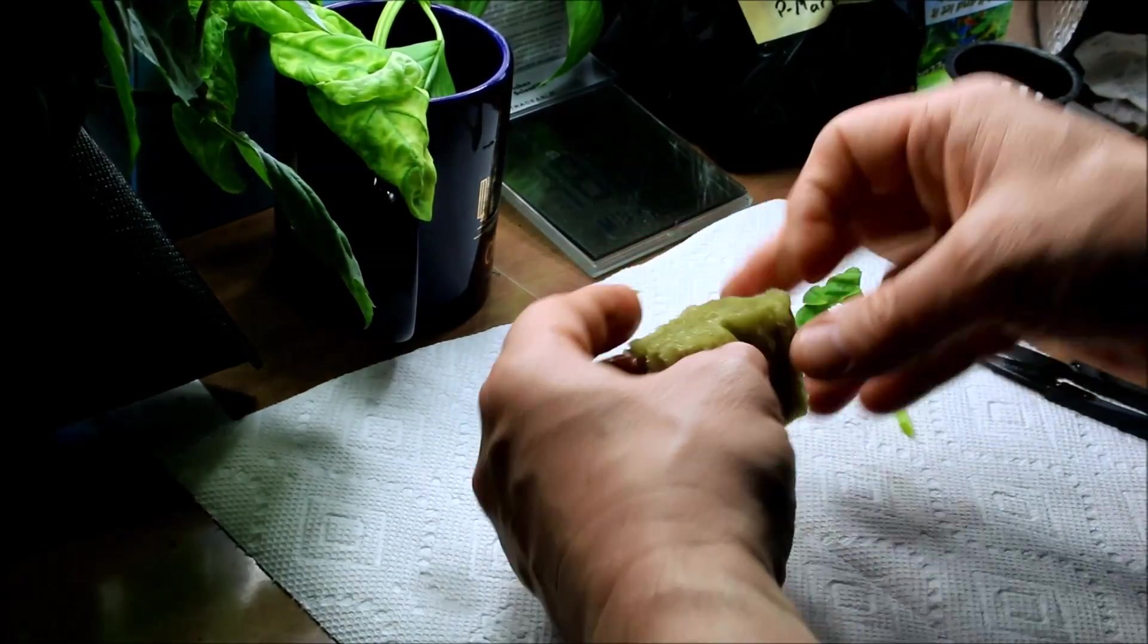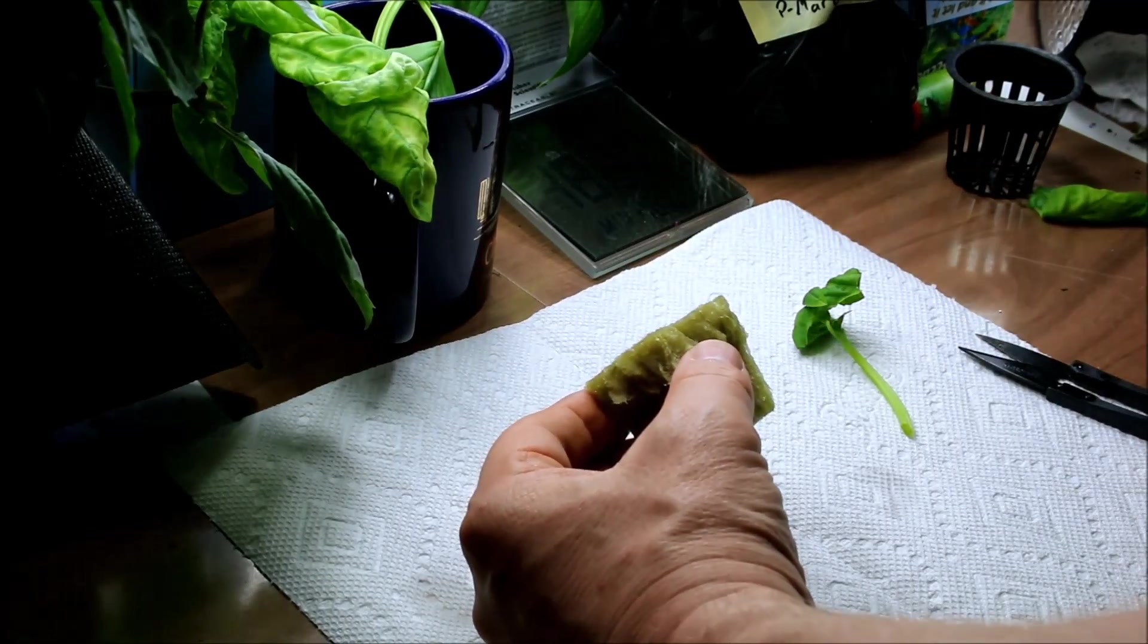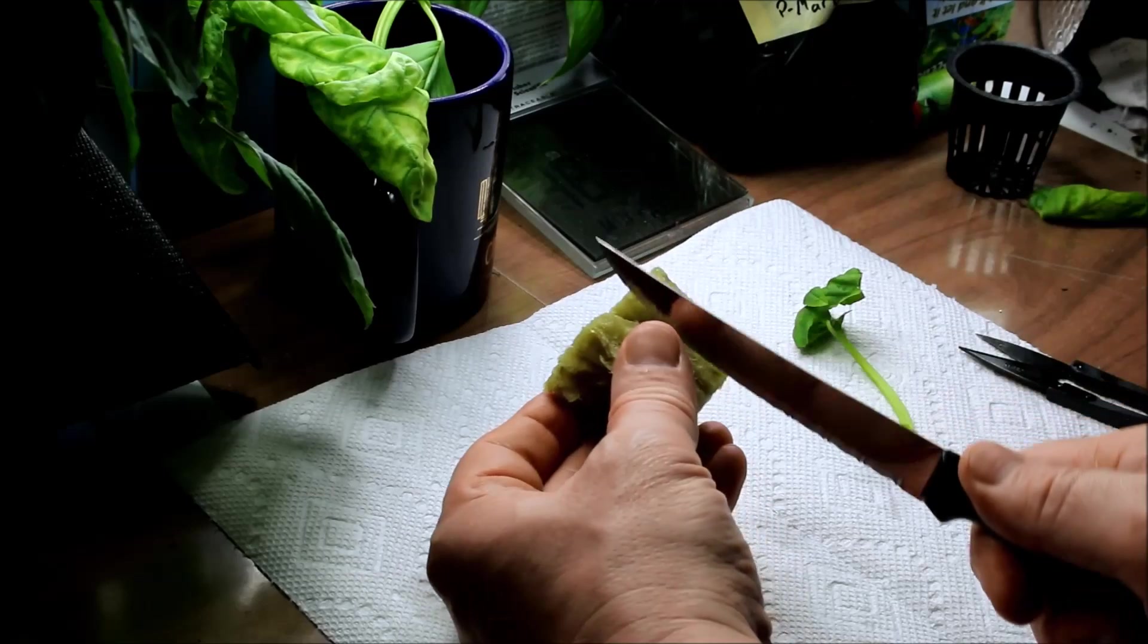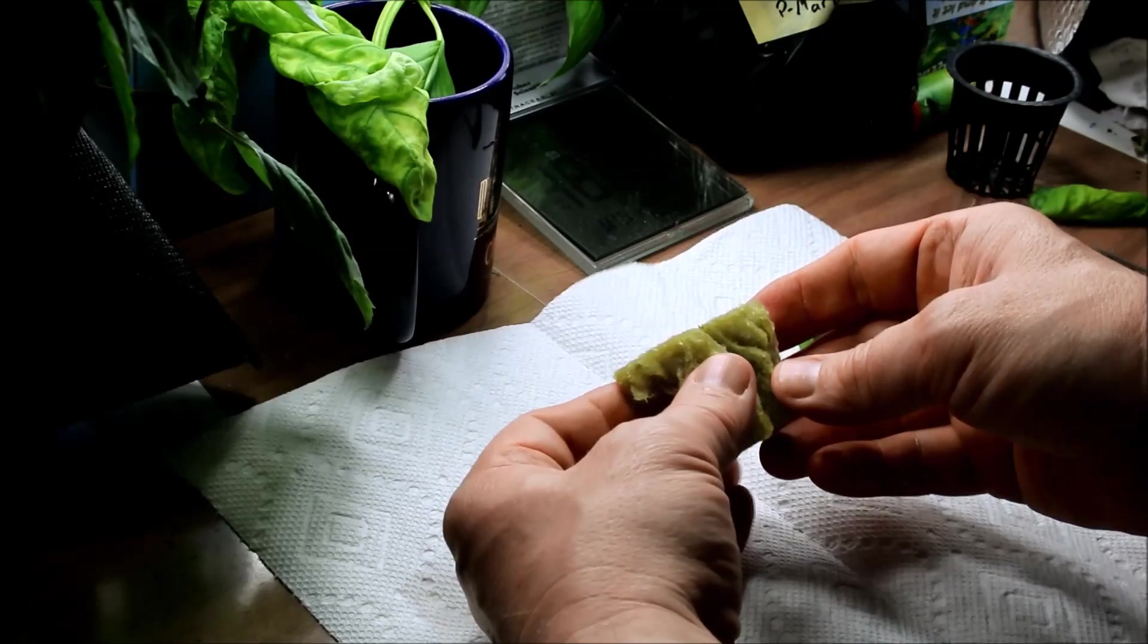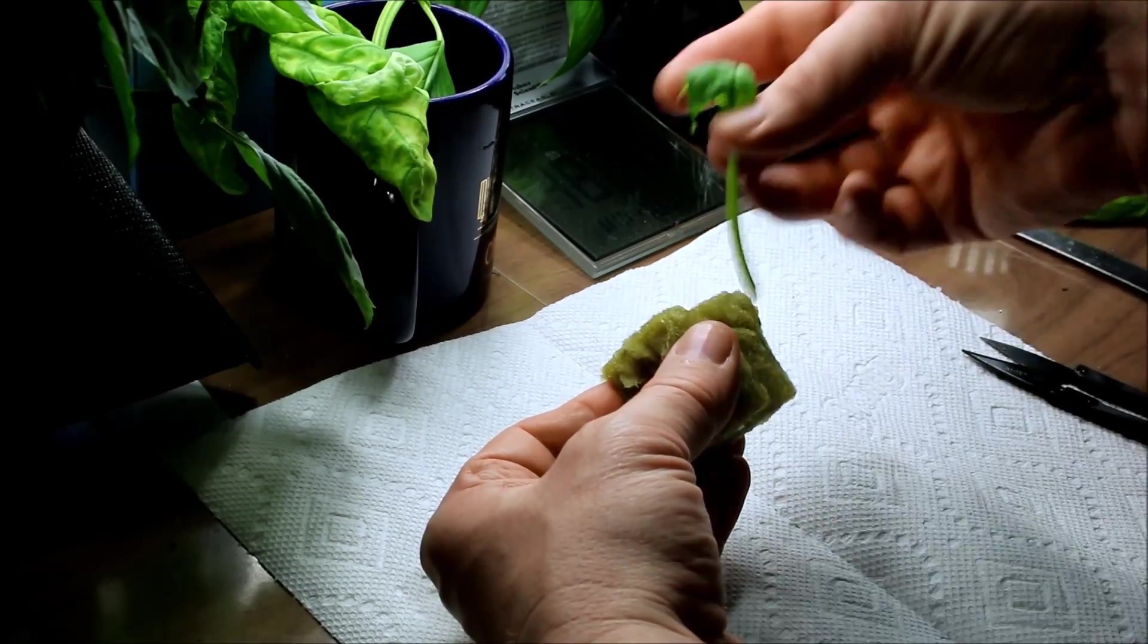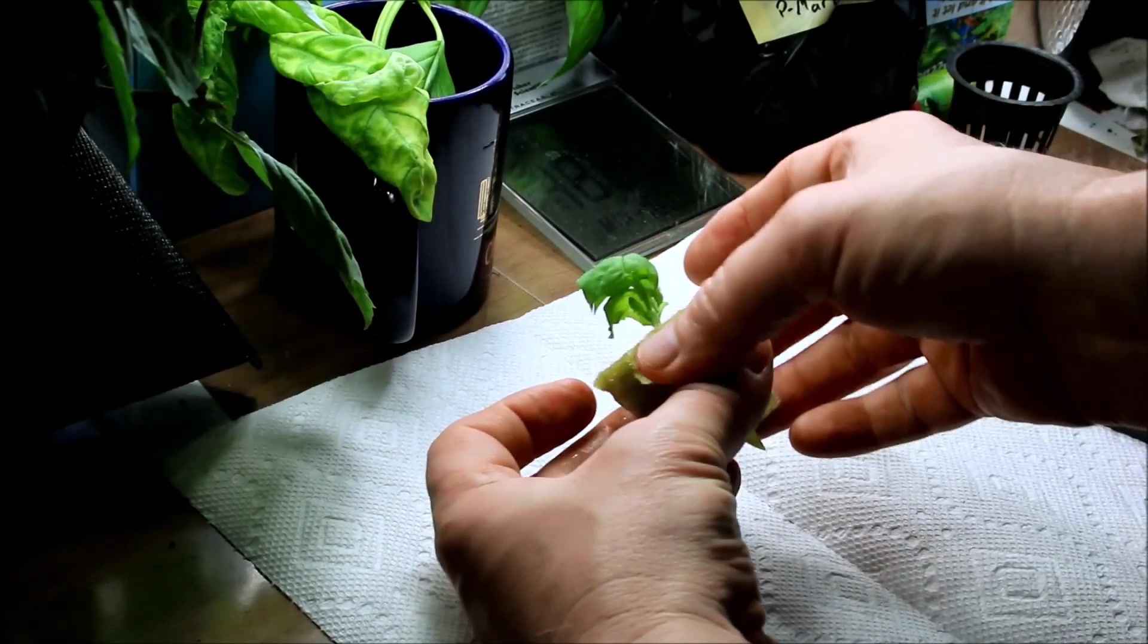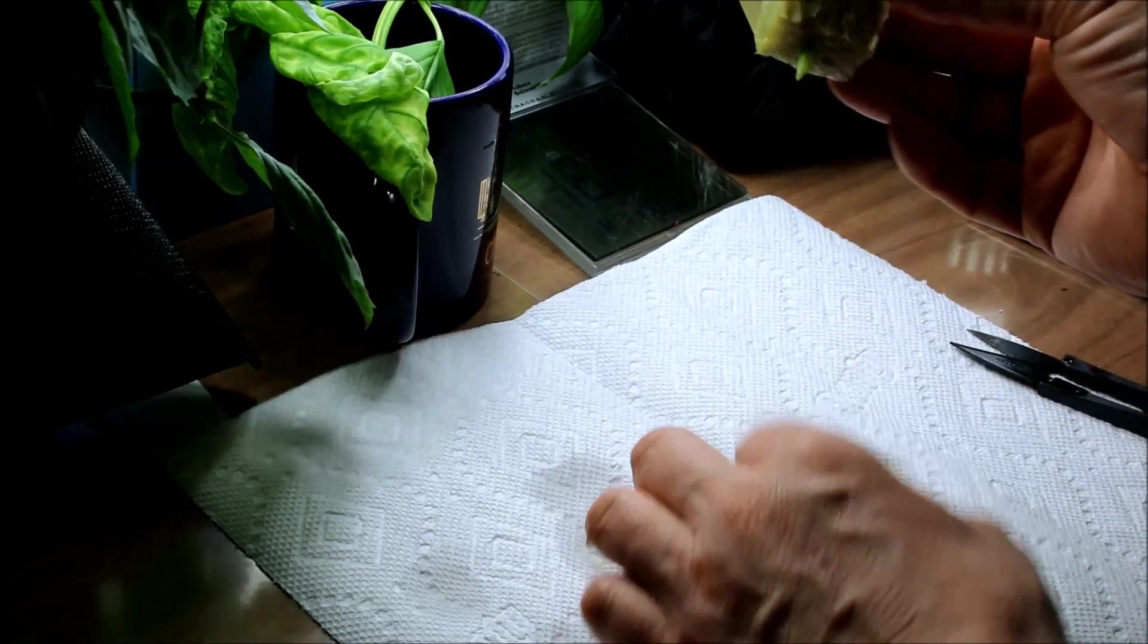But I want to try out my new system so what I'm going to do this time is just cut my rock wool. All I want this rock wool to do is to hold the plant since I haven't purchased any neoprene stoppers like I've seen other guys using. So I'm just going to have this holding it like that with the root, or should I say the bottom of the stem, showing.